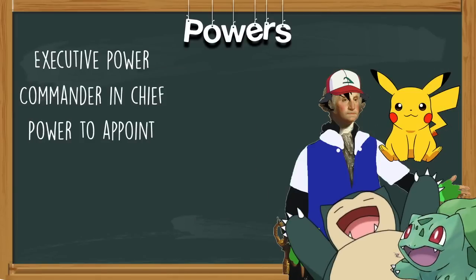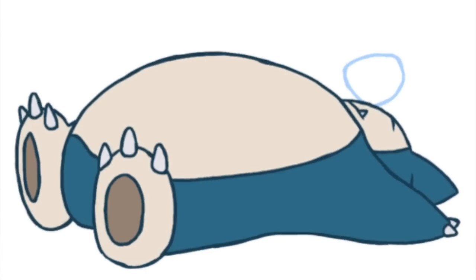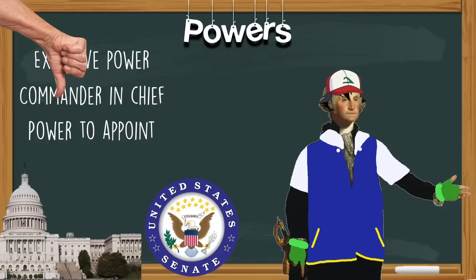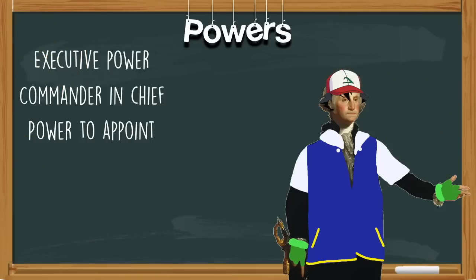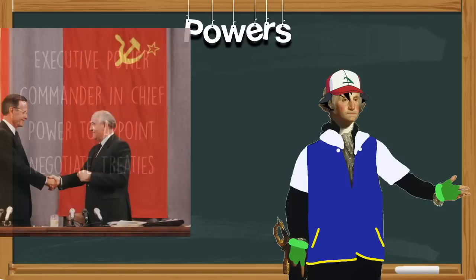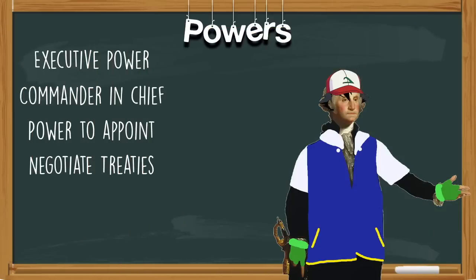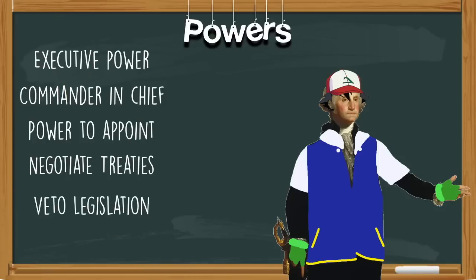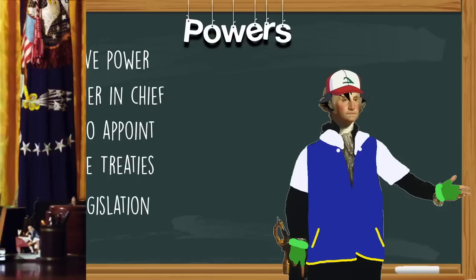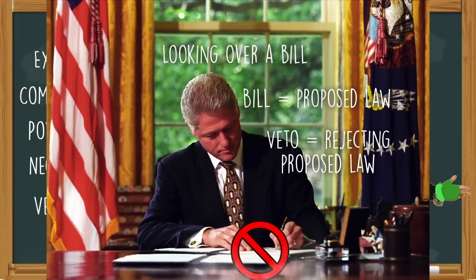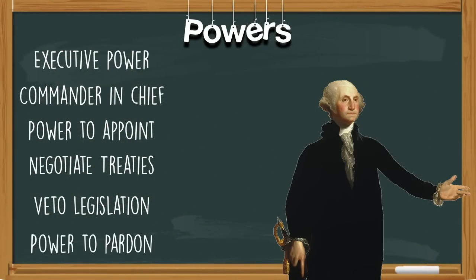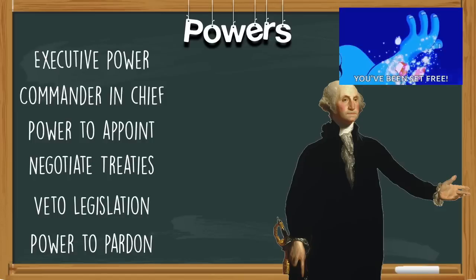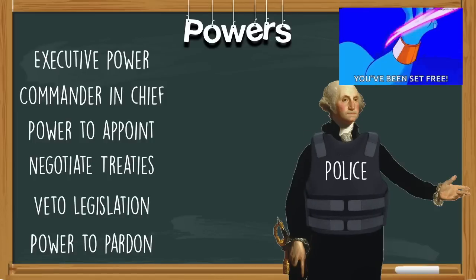Should the president choose somebody who is unworthy of the position, the Senate will approve or deny this appointment — that's called checks and balances. The president can also negotiate treaties with other nations, and again the Senate is going to be the one to approve or deny these treaties. They're also given the power to veto legislation, which means to reject a proposed law. Finally, they have the power to pardon — the president of the United States has the power to excuse someone for their federal crimes.